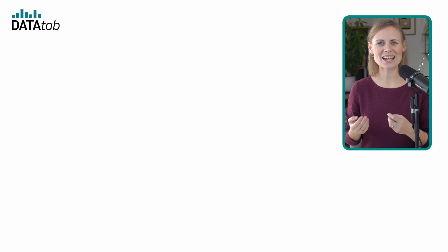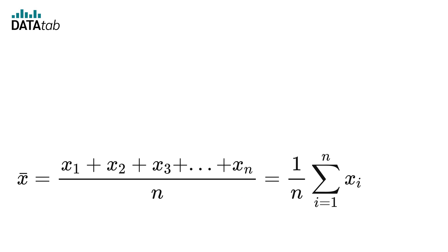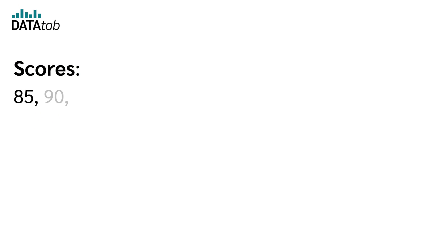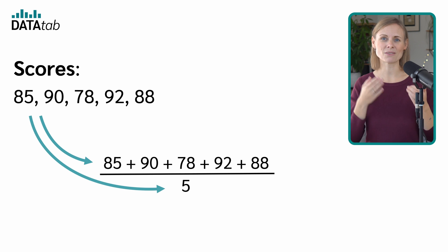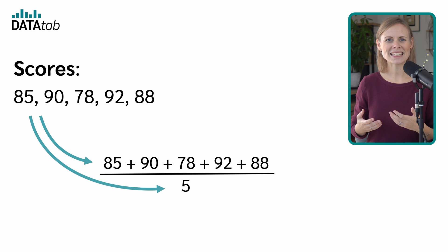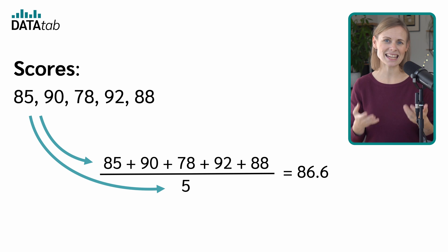Measures of central tendency are for example mean, median, and mode. The arithmetic mean is the sum of all observations divided by the number of observations. Let's look at an example. Imagine we have the test scores of five students: 85, 90, 78, 92, and 88. To find the mean score, we add up all the scores and divide by the number of scores. So the mean test score of these five students is 86.6.